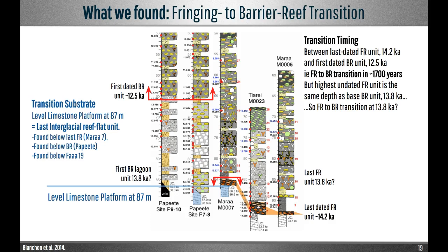The fringing reef retreated upslope — so how does it transition into a barrier reef? The last date on the fringing reef is 14,200 years from about 93m in core 23, but the highest fringing reef unit is at 87m in core 7. This unit has the same elevation as lagoon units at the base of the barrier reef, which are 13,800 years old, so the last fringing reef likely existed until about 13,800 years ago. The first barrier reef crest unit occurs at 65m around 12,500 years, but lower lagoonal units imply the crest was once in a more seaward position, suggesting the transition from fringing to barrier reef likely took place at 87m around 13,800 years ago.